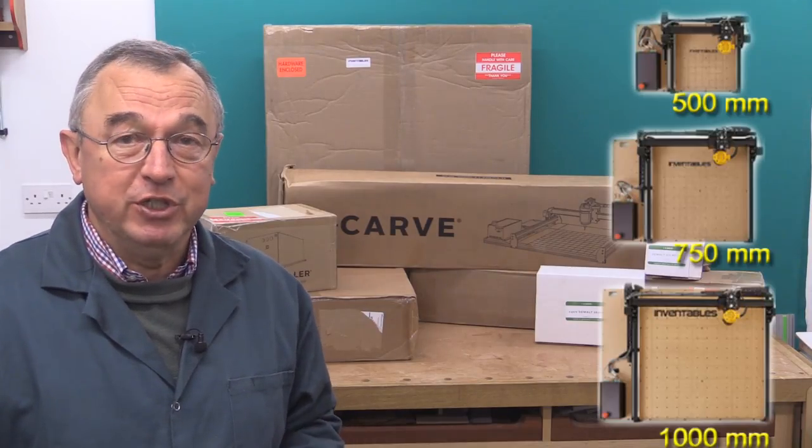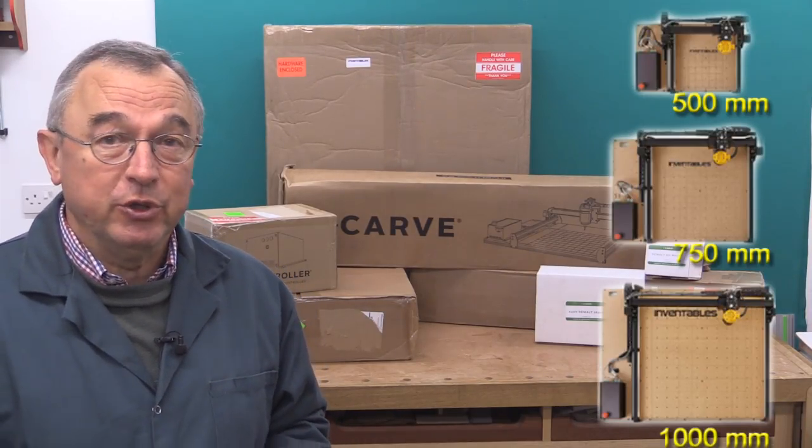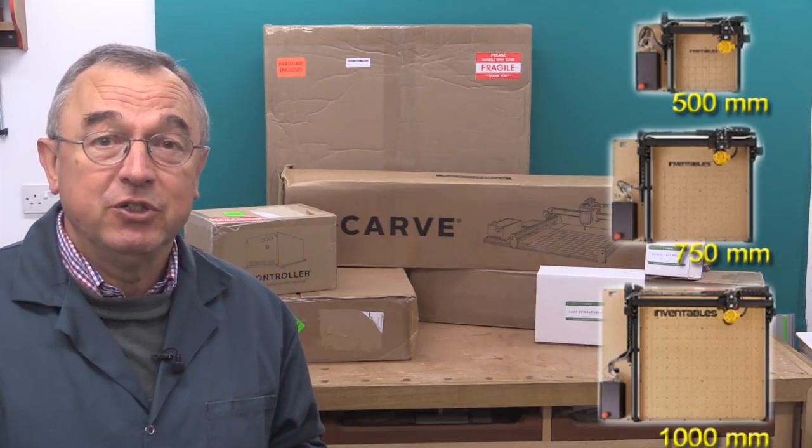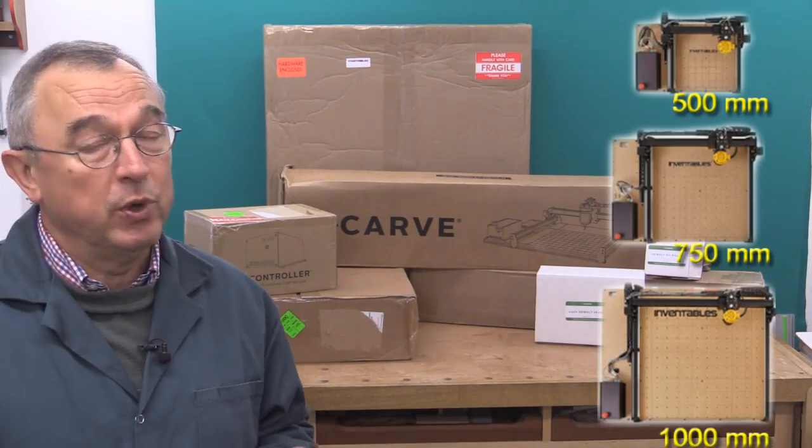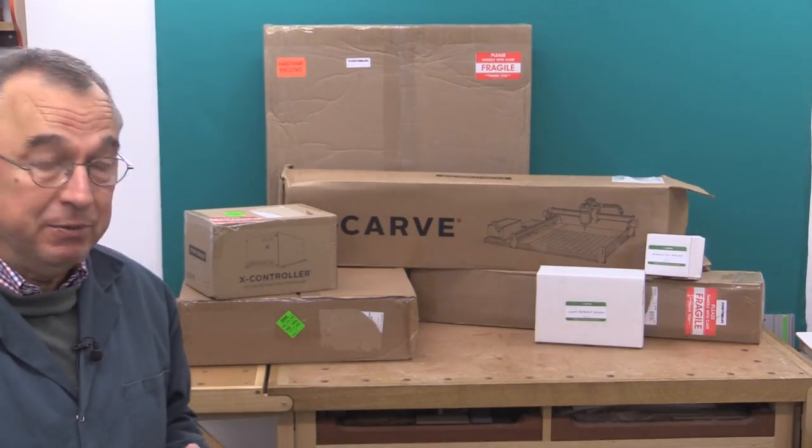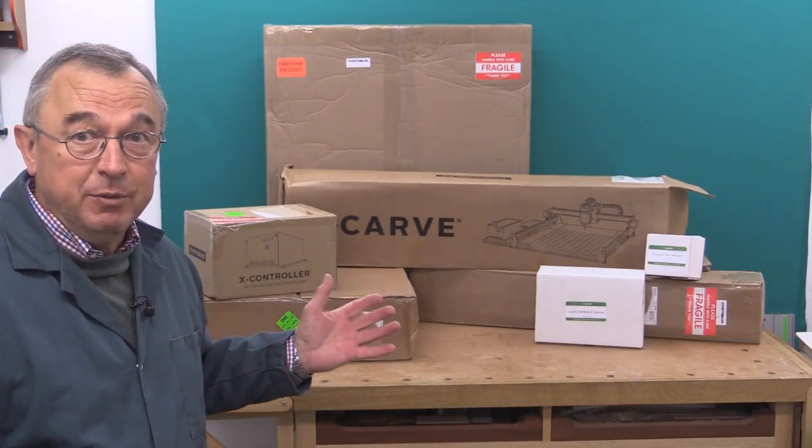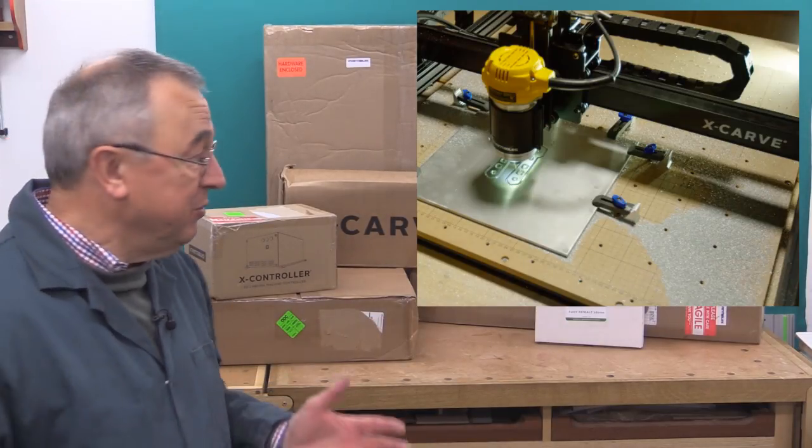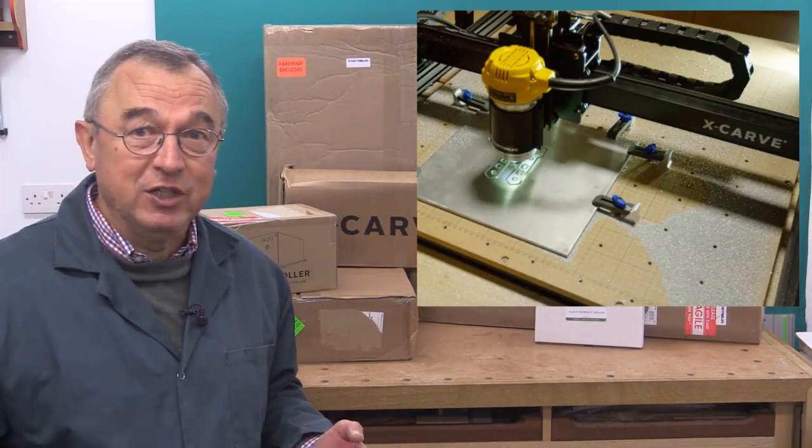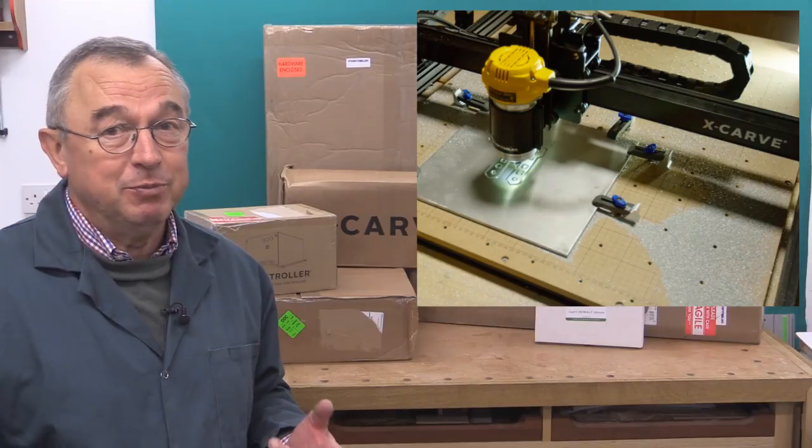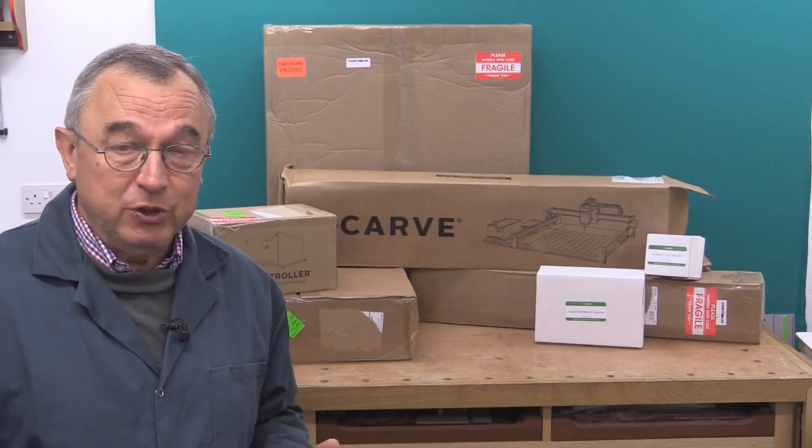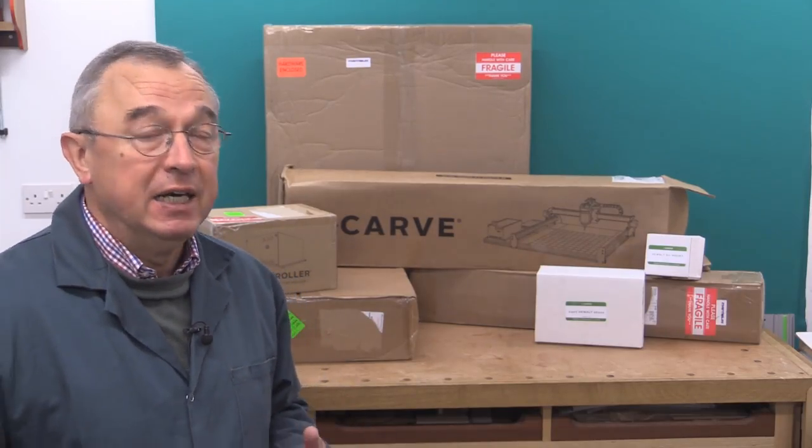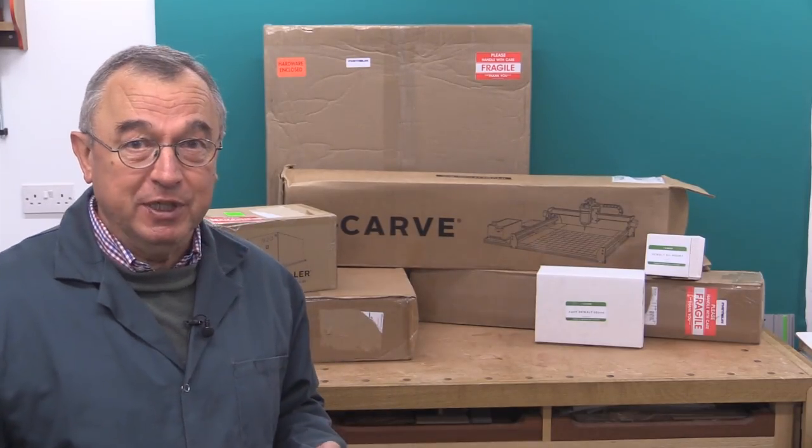To start with, they come in three sizes rather than two. You have the 500mm, 750mm, or the 1000mm size bed. Now I've been sent by Inventables the 750mm machine. It comes in component form just like its predecessor, and I'm going to be assembling this in a series of videos which I'll try and release about one every week until the machine is fully built. And when it's built, I'll put it through its paces.